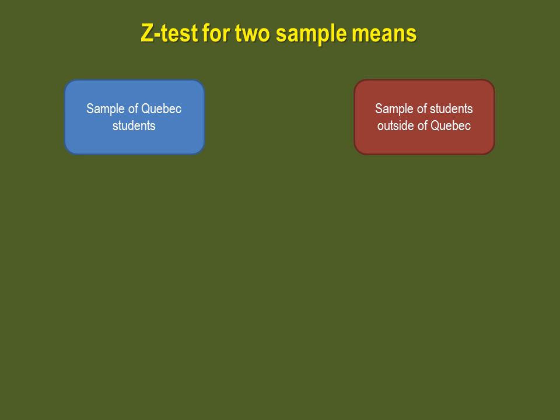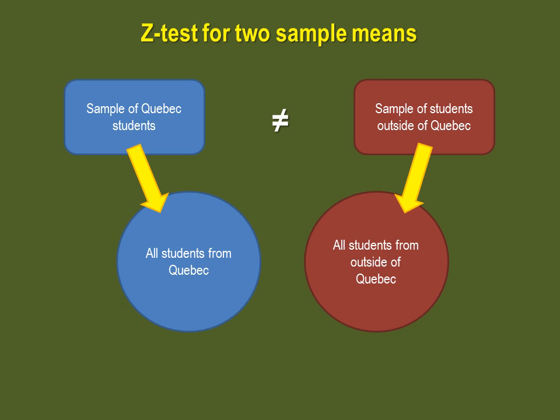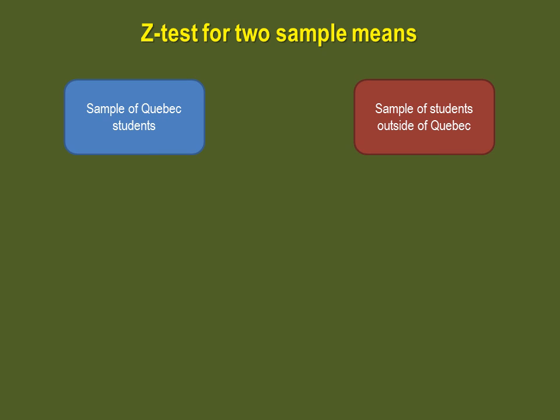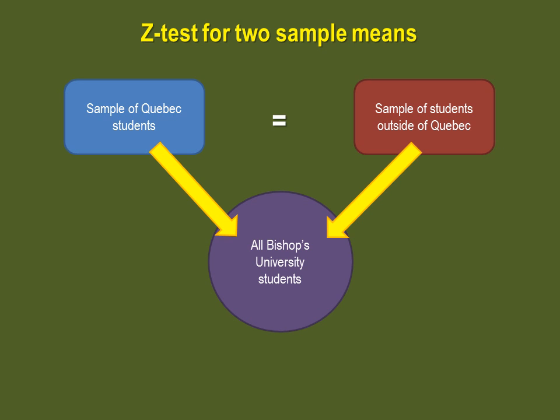If you reach the statistical conclusion that the means of your samples are significantly different, then we can say that there are two distinct age groups at Bishop's University: the age group of Quebec students and the age group of students from outside of Quebec. On the other hand, if the means are not significantly different, then we can say that there is only one age group at Bishop's University, and as such there is only one age population for Bishop's University students.